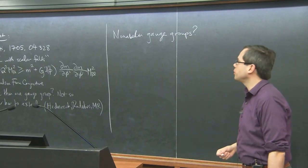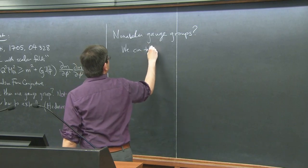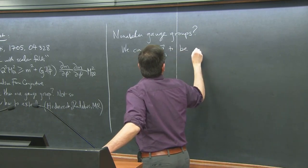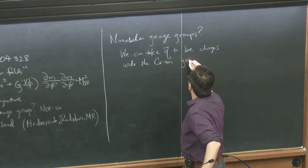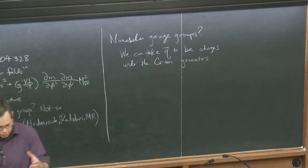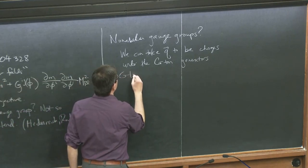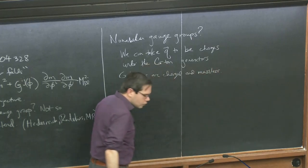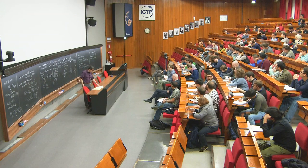Another question is what happens for non-abelian gauge groups. We sort of mentioned this yesterday with the example of charge states in the heterotic string theory. We can take the Q's to be charges under the Cartan generators of the Lie algebra — the maximal torus, the U(1)s contained inside the gauge group. We can still apply this condition, but because the gluons themselves are charged and massless, they're infinitely far out in the space, and so this becomes a trivially satisfied condition for a non-abelian gauge theory.